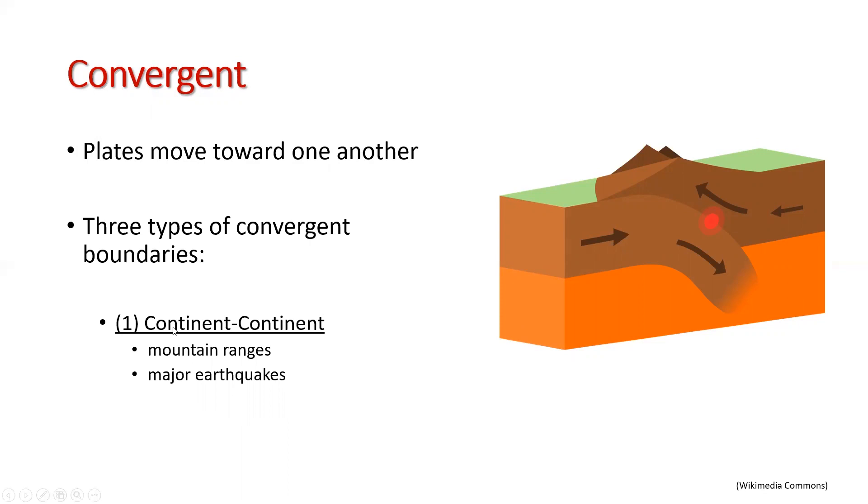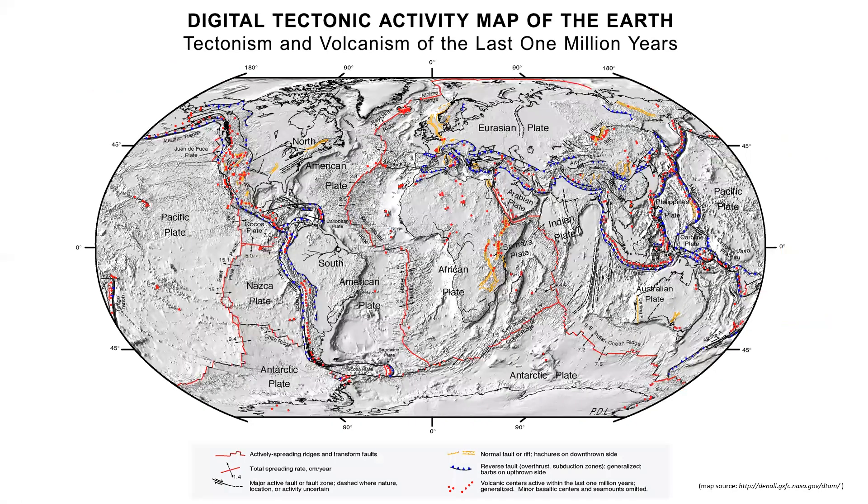The first subtype is continent-continent boundaries. These boundaries are characterized by high mountain ranges and big earthquakes. The most foremost example of a continent-continent convergent boundary is the Himalayas, shown here.